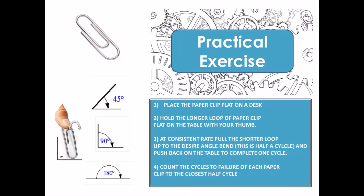Let's do a practical exercise using Minitab. For this exercise you will need 15 paper clips, and we will use the bending angle of the clip as the accelerating factor. We will use three levels: 45 degrees, 90 degrees, and 180 degrees. You pull the clip to the desired angle — that counts as half a cycle — then push it back to the normal position, which completes one full cycle. You do this until the clip breaks.